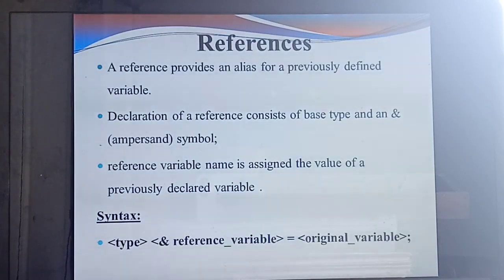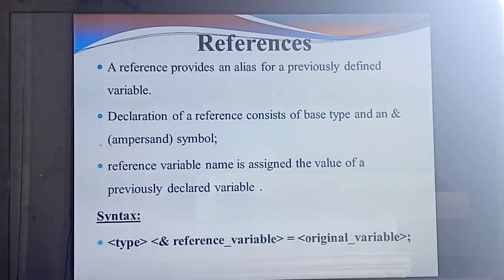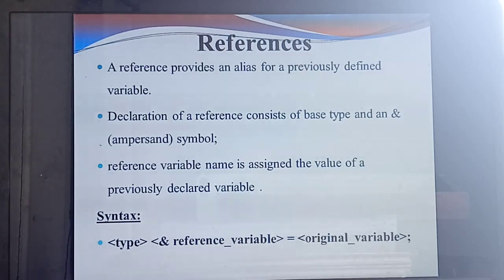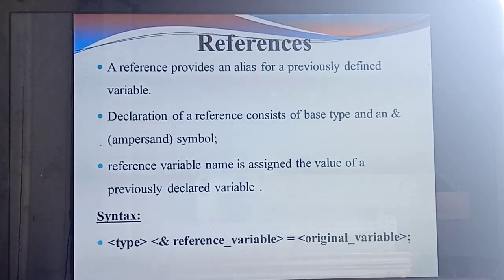Next topic is reference. What's the normal meaning of reference? In a book you have seen the word 'reference' — refer means you can get information from there. In the program also, you can give reference. Reference is nothing but an alias for a previously defined variable. Already you are declaring some variable, and you are getting the value from that previously declared variable. That is called reference.